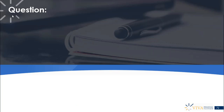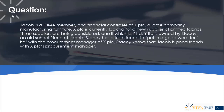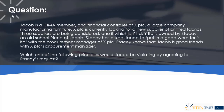Jacob is a CIMA member and financial controller of X PLC, a large company manufacturing furniture. X PLC is currently looking for a new supplier of printed fabrics; three suppliers are being considered, one of which is Y Limited. Y Limited is owned by Stacy, an old school friend of Jacob's. Stacy has asked Jacob to put in a good word for Y Limited with the procurement manager of X PLC, knowing that Jacob is good friends with that procurement manager. Which one of the following principles would Jacob be violating by agreeing to Stacy's request?